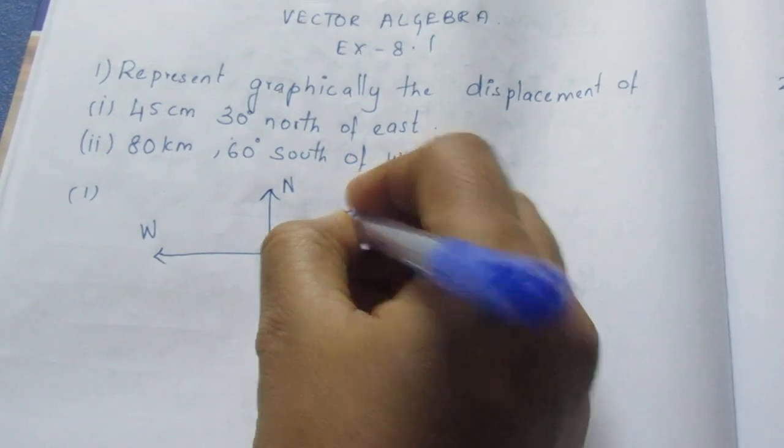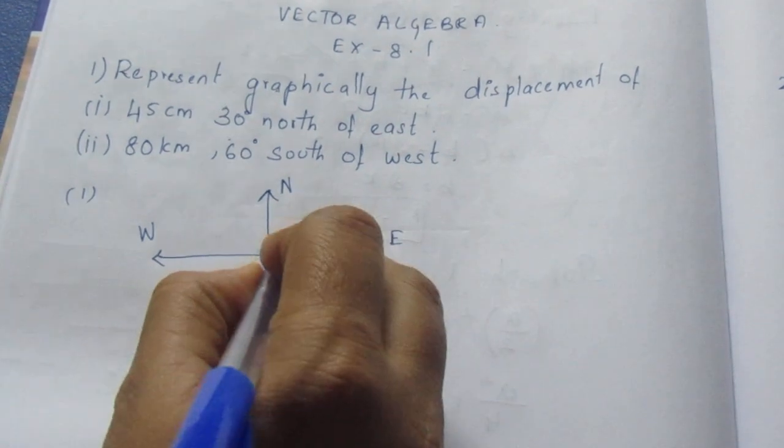If you look at this line, you will see this line. So, the east length is north. That is 30 degrees.